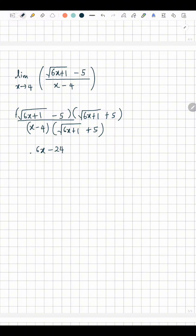6x minus 24 over x minus 4 into root 6x plus 1 plus 5. Now you can see the numerator, you can write it as you can take the 6 out and you can write x minus 4 in brackets.